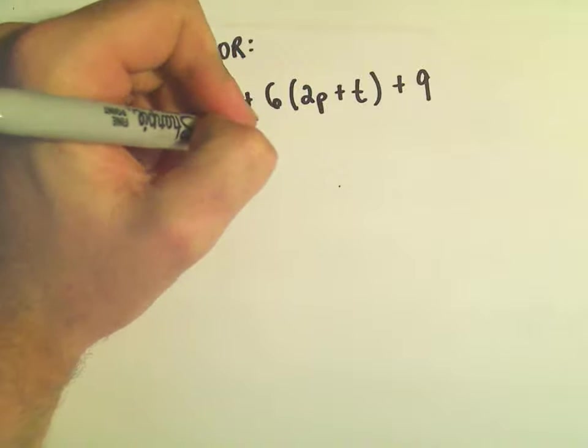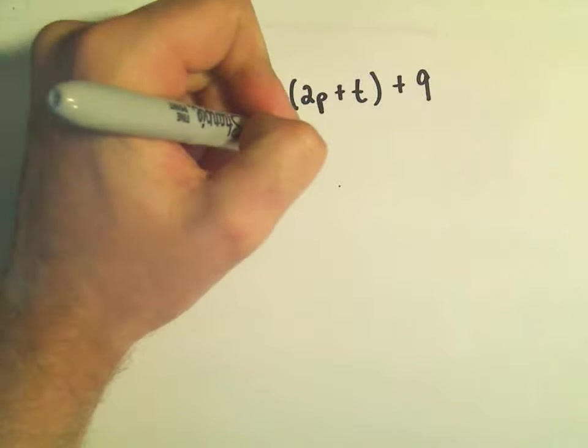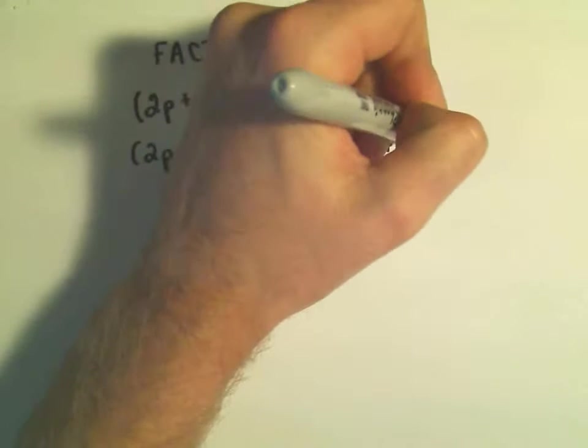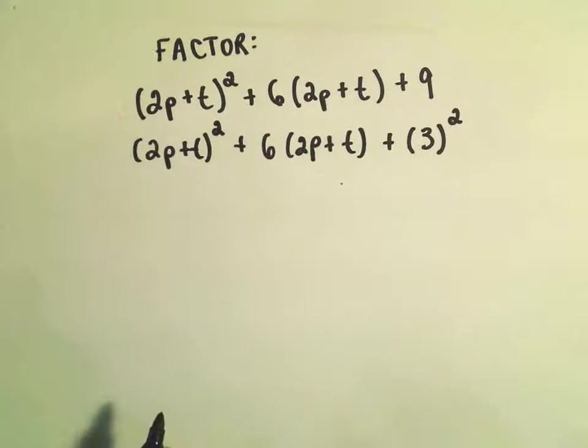We have 6, so I'm going to leave it at 6. The only thing I'm really going to do here at the first step is rewrite my 9 as positive 3 squared.